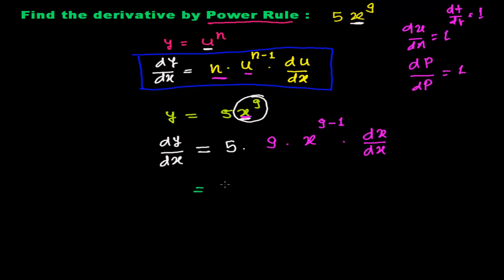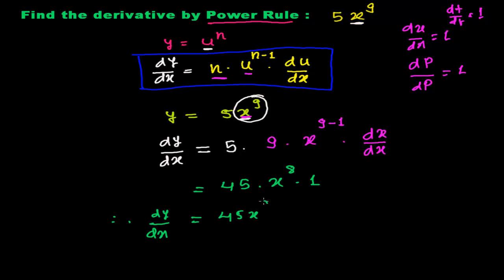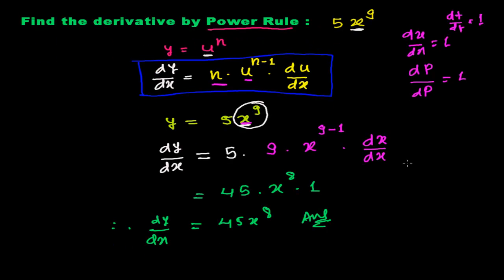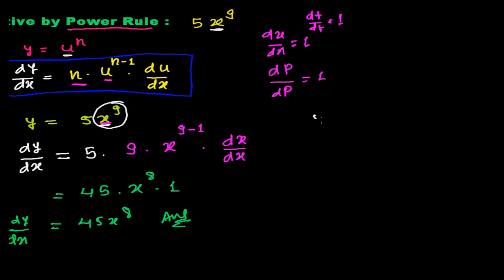So we get: 5 times 9 equals 45, times x to the power 9 minus 1, which is x to the power 8, times 1. Therefore dy/dx equals 45x to the power 8. That's the answer. Let me do one more problem to give you more understanding.